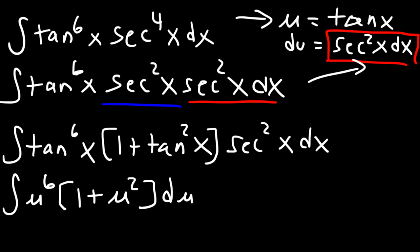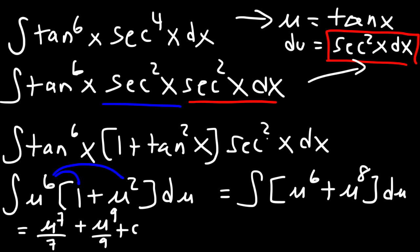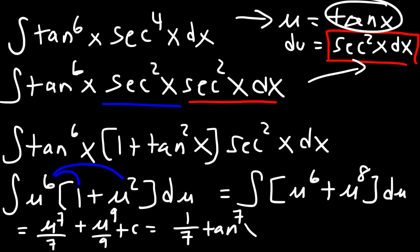Now we need to distribute u to the sixth to 1 and u squared. This becomes the integral of u to the sixth plus u to the eighth times du. Using the power rule, the antiderivative of u to the sixth is u to the seventh over 7, and for u to the eighth it's u to the ninth over 9, plus c. Now let's replace the u variable with tangent. The final answer is 1/7 tangent to the seventh power of x plus 1/9 tan raised to the ninth power plus c.